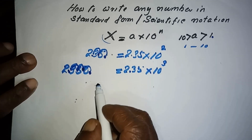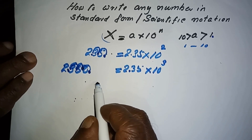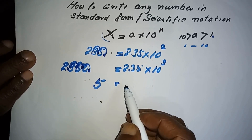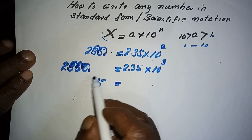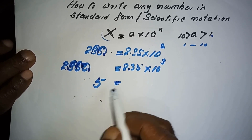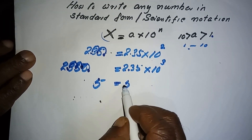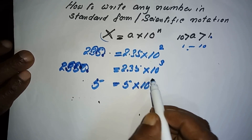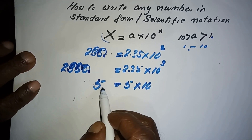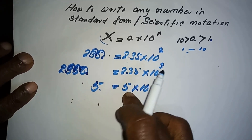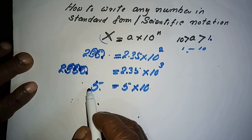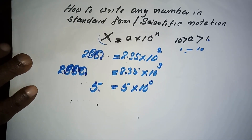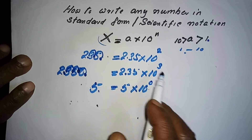Now take a single whole number: 5. This number is already between 1 and 10, so we can write it as 5 times a power of 10. We are not moving the decimal at all — we are keeping it as it is. Since there are no moves, the number of moves is 0, so the index is 0.